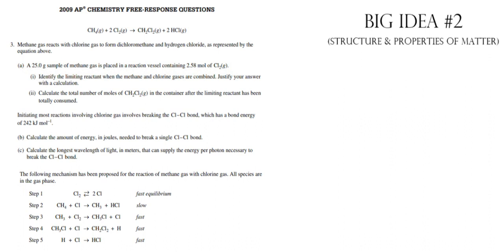They give us an equation that says methane gas reacts with chlorine gas to form dichloromethane and hydrogen chloride as represented in the equation above. A 2.5-gram sample of methane gas is placed in a reaction vessel containing 2.58 moles of chlorine. Part I: identify the limiting reactant when the methane and chlorine gas are combined. Justify your answer.